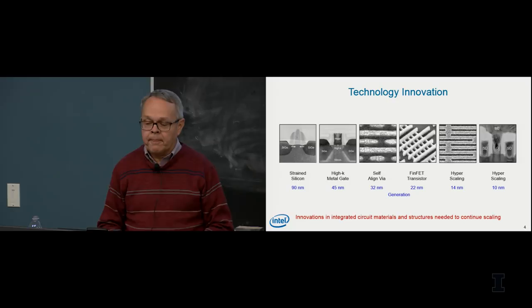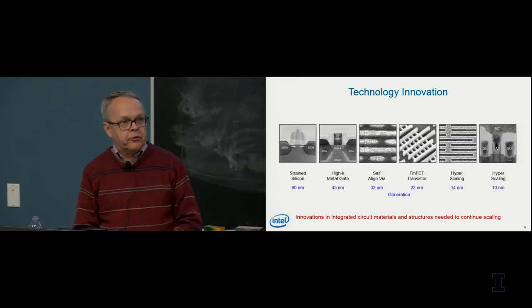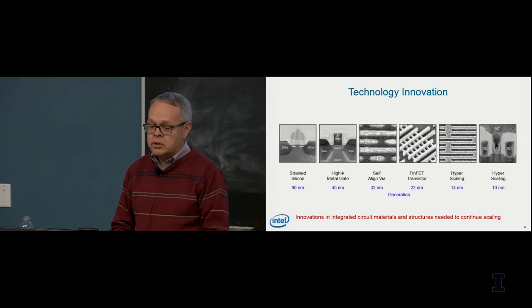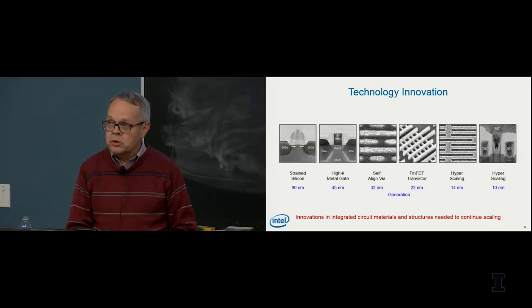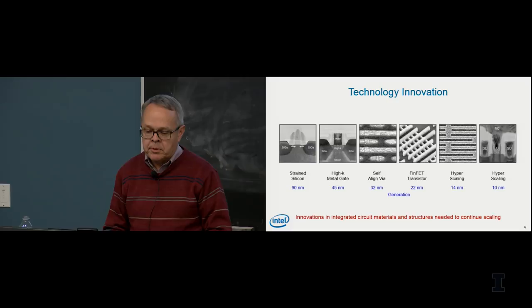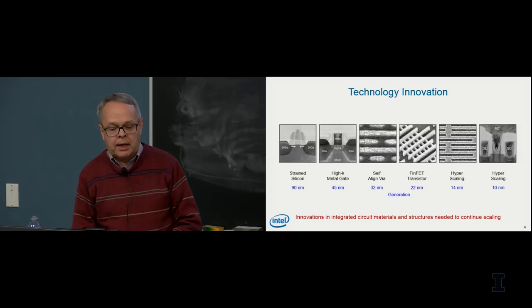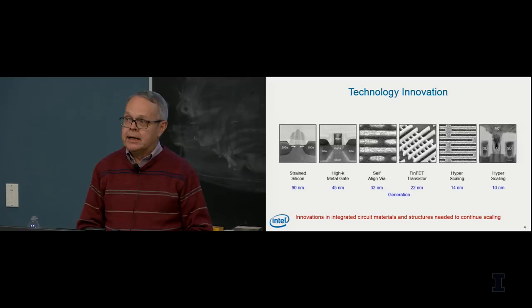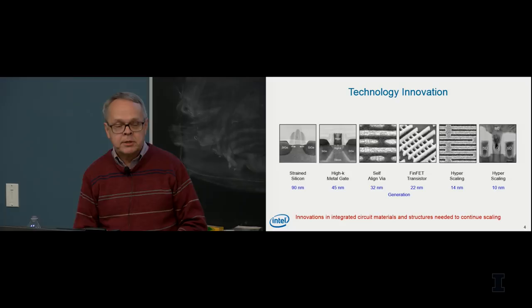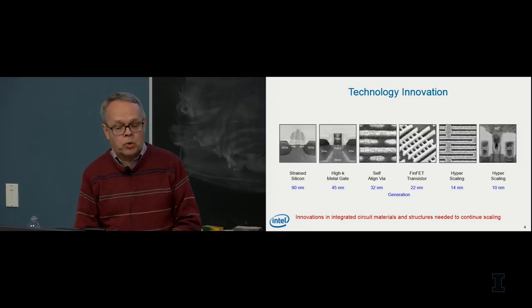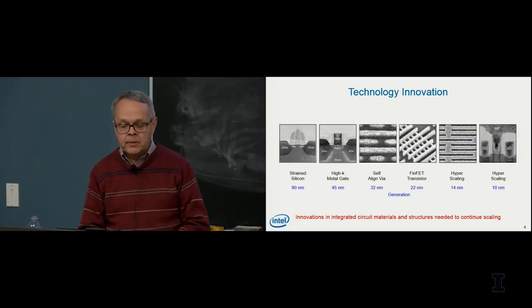For many generations now, simple scaling was good enough, but for the past 15 or more years we've had to continually innovate, coming up with new transistor structures and new transistor materials to enable scaling. At our 90 nanometer technology back in 2003, we introduced strain to silicon — adding silicon germanium to the source side of the PMOS device to impart compressive strain on the silicon atoms in the channel, improving hole mobility. On NMOS we added a tensile layer to increase electron mobility.